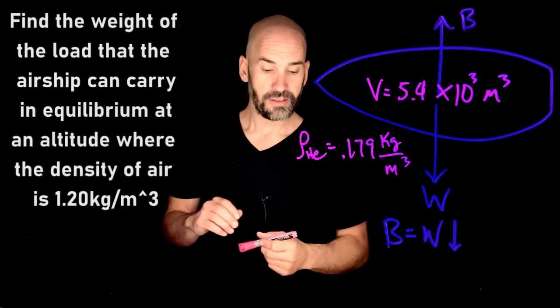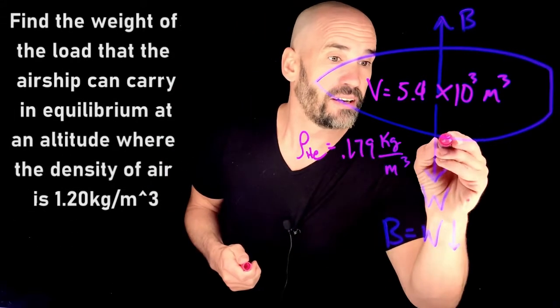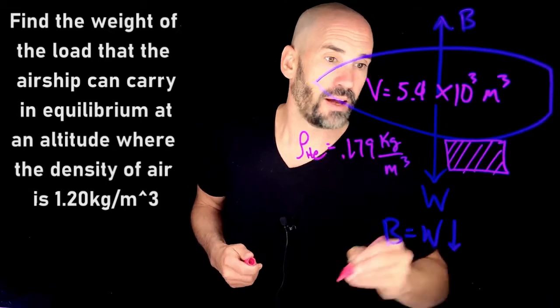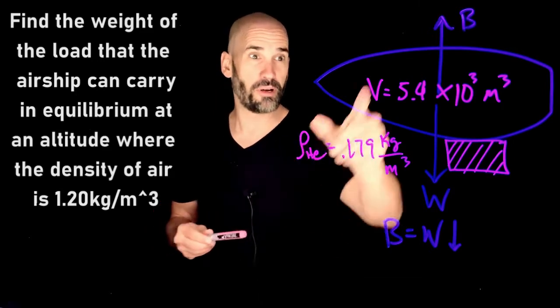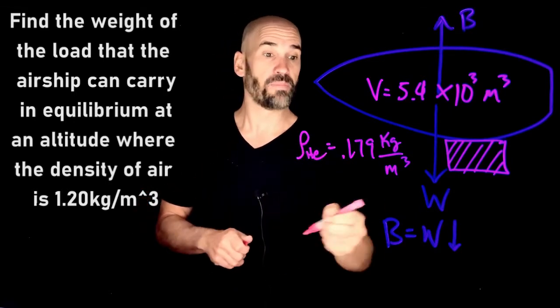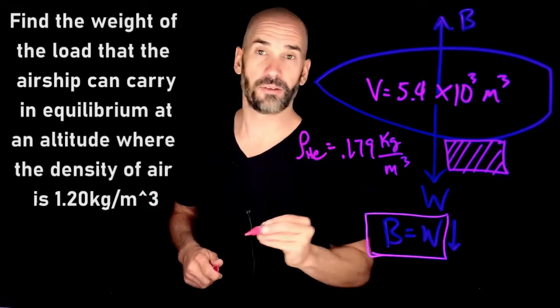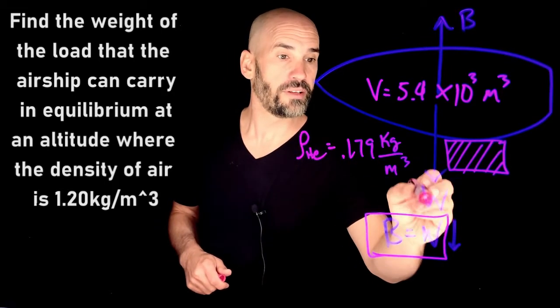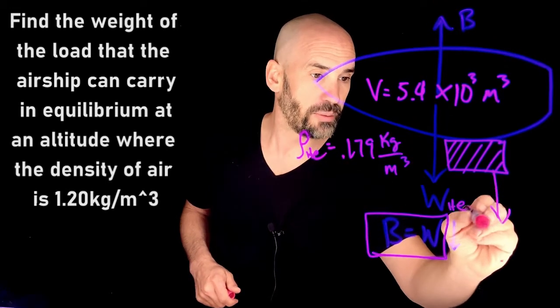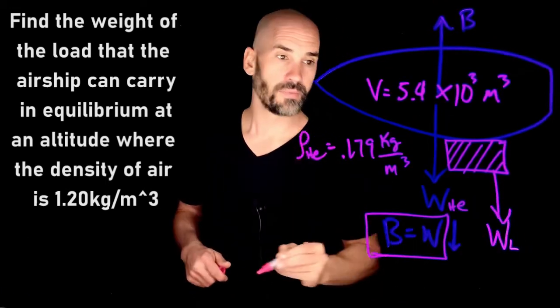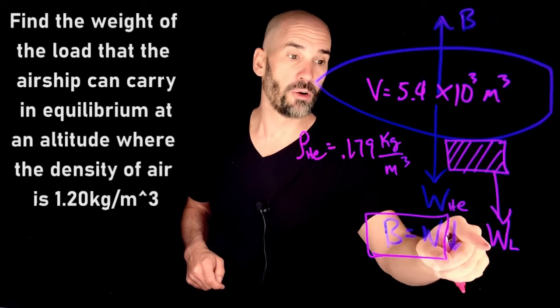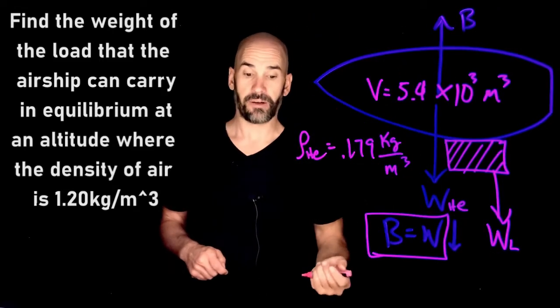So find the weight of the load that the airship can carry. So the weight of load is basically whatever it's carrying. How much extra is available, given this buoyant force? How much load can you actually add on here? People, cargo, whatever, such that this equality still holds. So here you're going to have both the weight of the helium inside there, but you're also going to have this W, this weight of the load. And this is what we want to find out. Given this, what is the weight of the load such that this balloon can still float in the air?